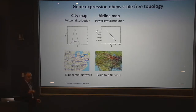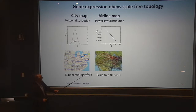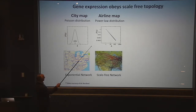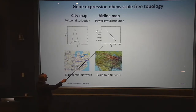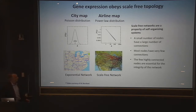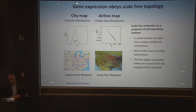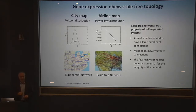An insight from Barabasi got me interested in making gene networks: protein networks obey scale-free topology, resembling an airline map rather than a road map. The frequency of connectivity K is inversely proportional — an inverse power law — to the number of connections a node has. Scale-free networks are a property of self-organizing systems: a small number of nodes have a large number of connections, most nodes have very few, and the few highly connected nodes are essential for network integrity. If we can boil 20,000 genes into modules and identify the key nodes within them, we've simplified the problem to find the drivers essential for network integrity.